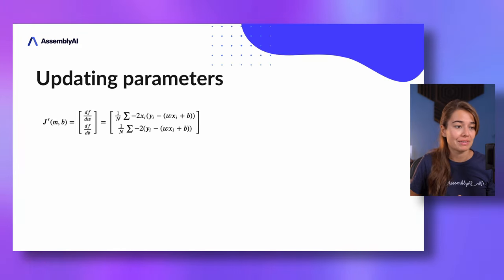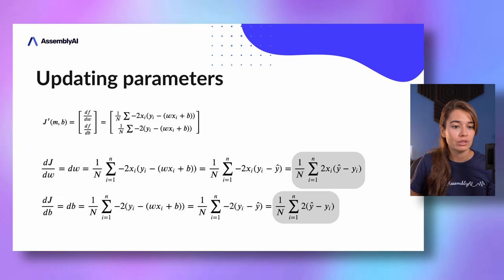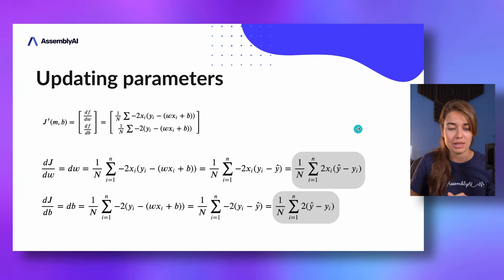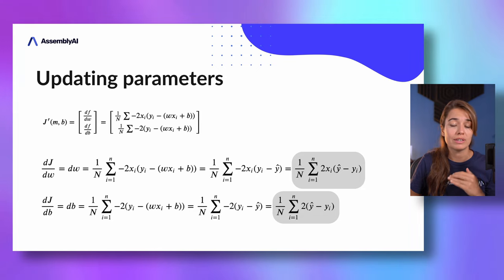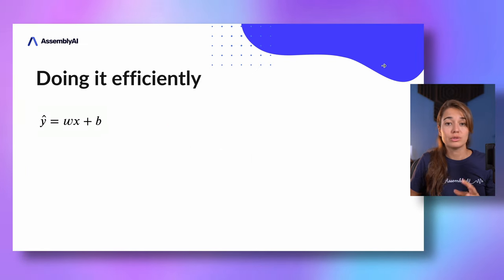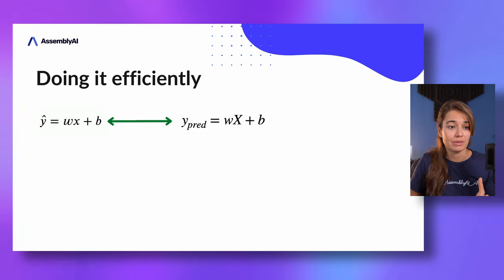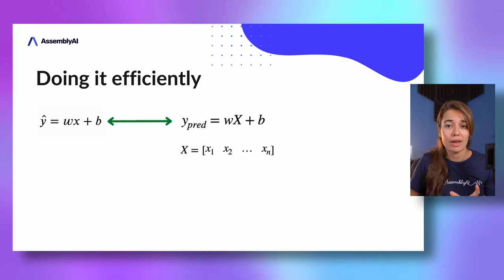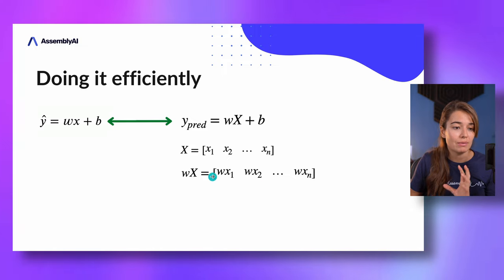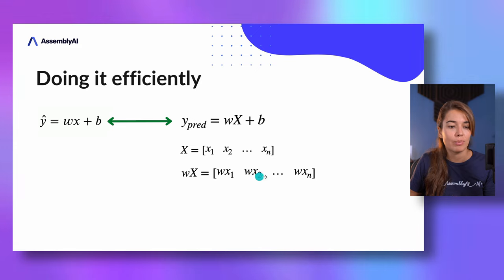Some notes to make implementation easier: there is a simplified version of the derivatives or gradients of the error function, and this is the version we will implement. Also, while implementing this model, we're not going to go over samples one by one. We're going to put them in a matrix and do all the calculations at the same time. So we can denote x with a capital X, which will be an array of x values.